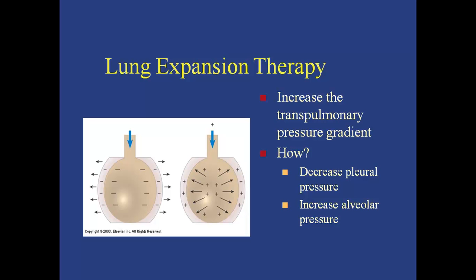That negative pleural pressure creates a pressure gradient that lets air flow into the collapsed alveoli. The other method is to increase alveolar pressure, shown in the second drawing on this slide. This is done by applying positive pressure, which we'll talk about later.